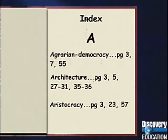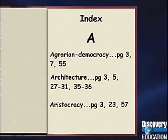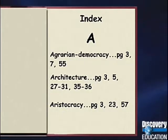The index is located at the end of a book. An index is a list of words along with the page numbers on which those words can be found. Some listings have many page numbers or whole chapters devoted to a subject. Others are mentioned only a few times.